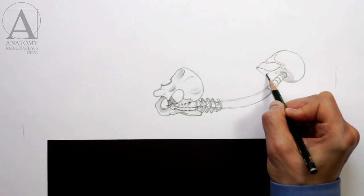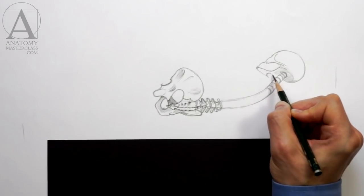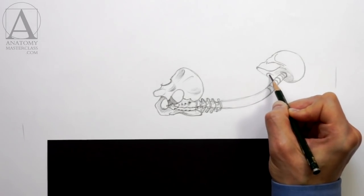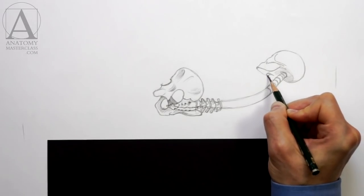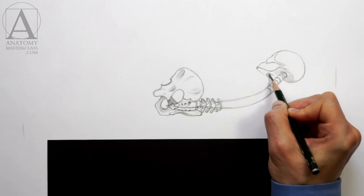Just below the jaw, you can see the U-shaped bone. Sometimes it is referred to as a tongue bone.